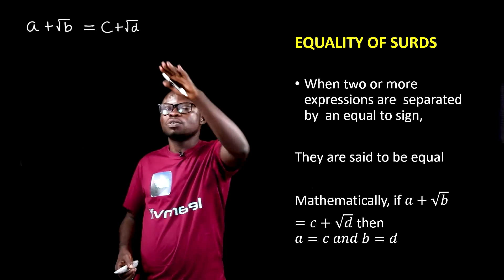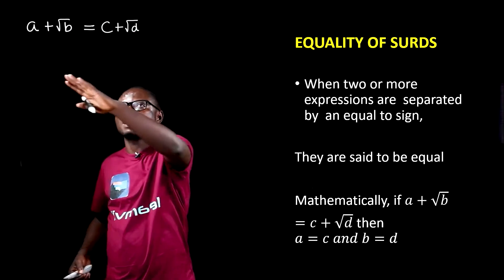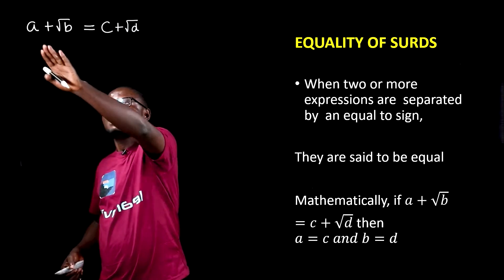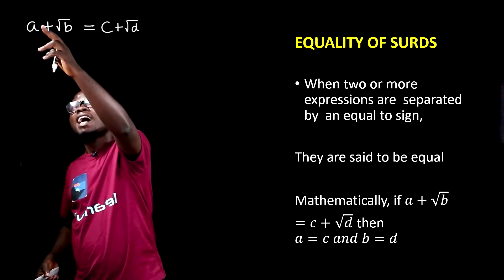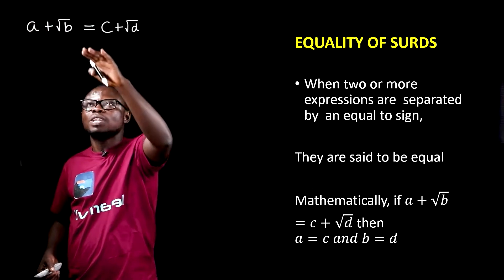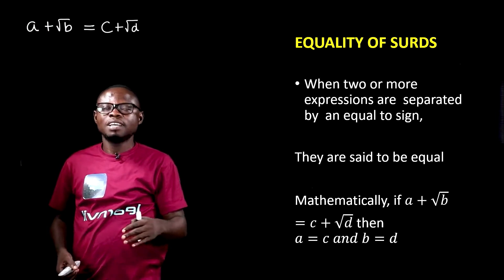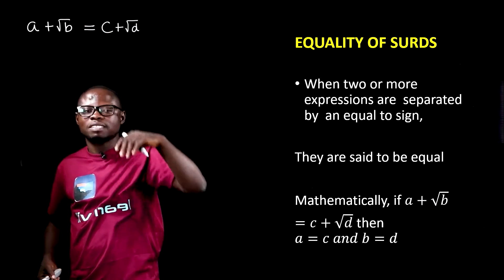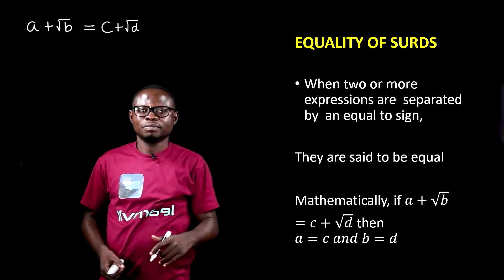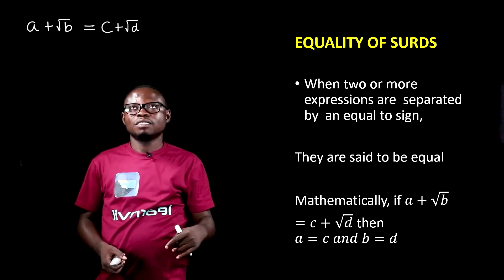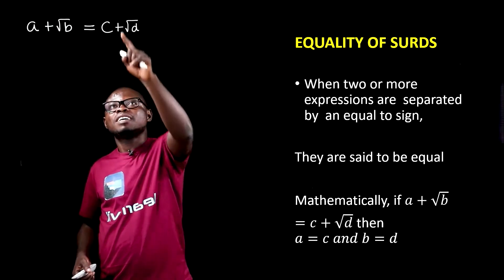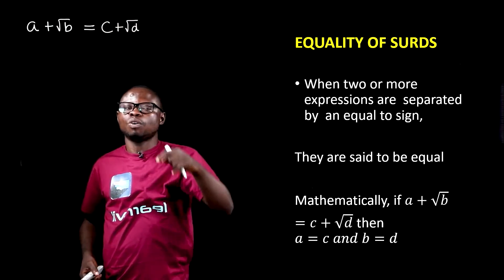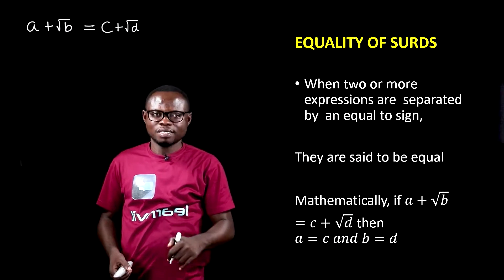In this equation, there is a left-hand side and a right-hand side. On the left-hand side, we have a rational part of the whole expression, and we have the irrational or the surd part of the expression. To the right, we have the rational part and the irrational part, or the surd part.